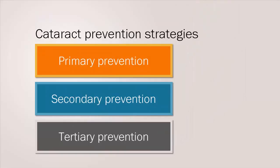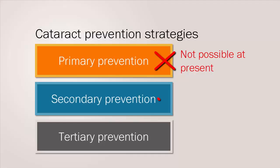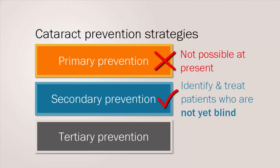When we consider prevention strategies for cataract blindness, at present primary prevention to control cataract blindness is just not possible — there is no clear method of preventing the lens from clouding as part of the aging process. Secondary measures aim to identify and treat cataract patients who are not yet blind, that is less than 3/60 visual acuity. And tertiary prevention efforts are focused on finding and treating the cataract blind and restoring their sight.